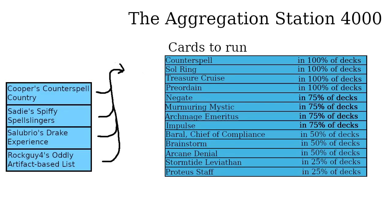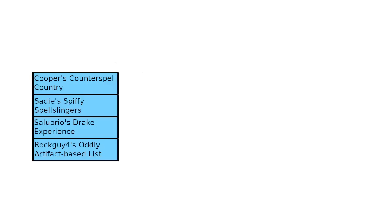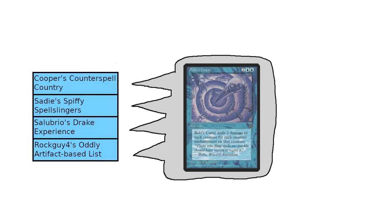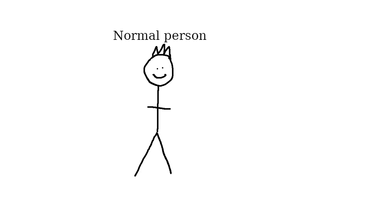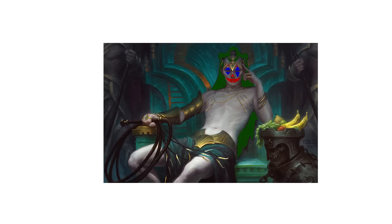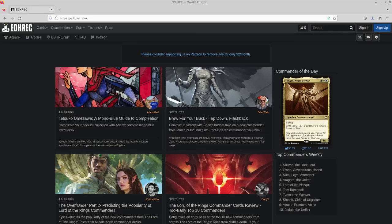This is where EDHREC comes in for the Commander format. In theory, a website that aggregates deck lists is going to allow sorting through a ton of potential card choices very efficiently. We aren't trusting the card analysis of just a single person, but rather the analysis of the collective, thereby reducing the risk of bias. Something to watch out for would be if these decks are influenced by each other, which could compound bad card decisions. This effect will probably always exist to some extent, since people look at each other's deck lists and generally exist in the same ecosystem, but by default it likely isn't going to be pronounced enough to undermine the idea behind an aggregating website.